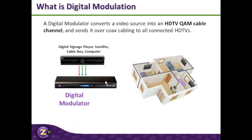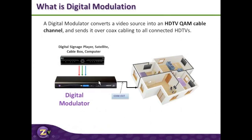That signal now goes into a ZV box, which in turn converts that signal into a simple QAM cable HD TV channel. Once we've created that channel, it's very easy to move and propagate that channel around a facility — in this case, a residence. This channel that we've created is now available on all of these TVs. That's basic modulation.